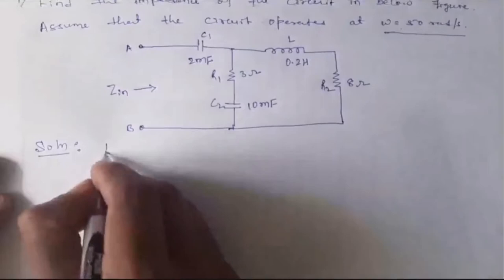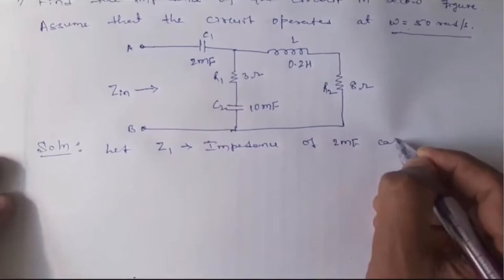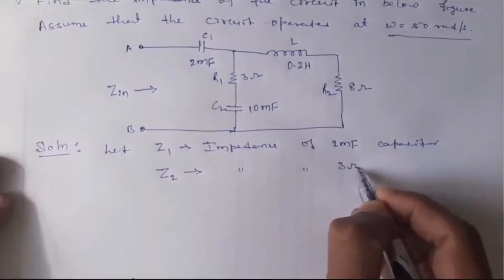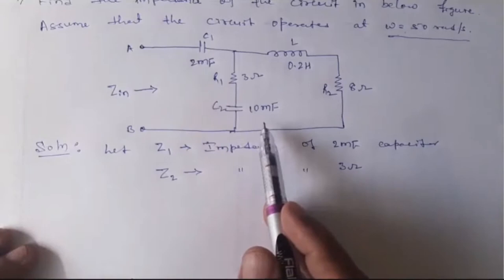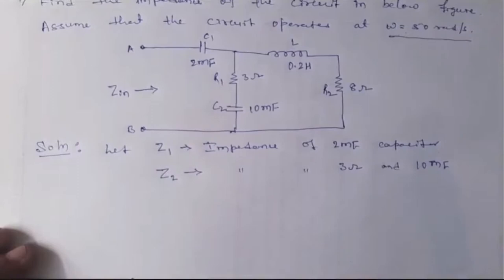Let Z1 be the impedance of the 2 millifarad capacitor, C1. Then Z2 is the impedance of 3 ohm and — there are 2 elements in series: one is a 3 ohm resistor and the other is C2, which is 10 millifarad. So Z2 is considered as the impedance of the 3 ohm and 10 millifarad elements — a 3 ohm resistor and 10 millifarad capacitor.